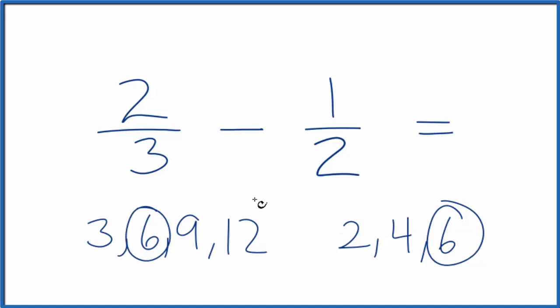So the lowest common factor for both two-thirds and one-half, that's 6. So if I could get this to be 6 here and here, we could subtract two-thirds minus one-half.